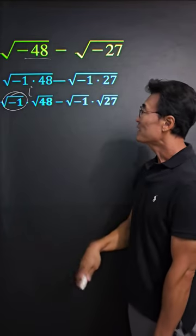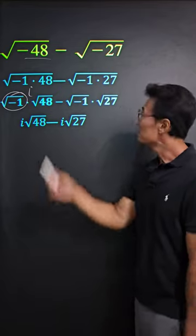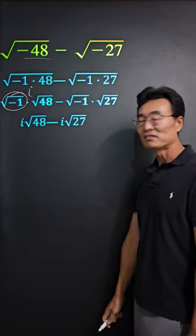Then we're going to rewrite this as i root 48. Same thing with this - it's going to be i root 27.